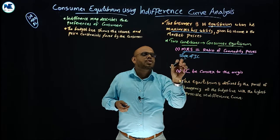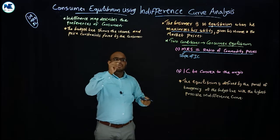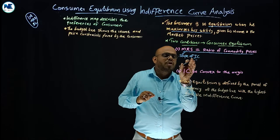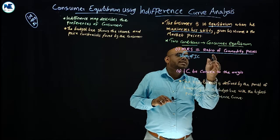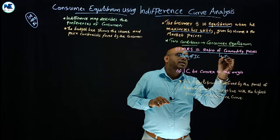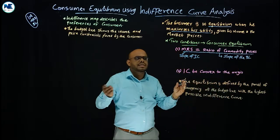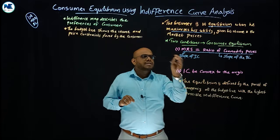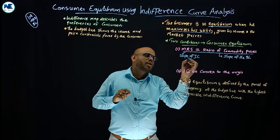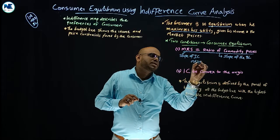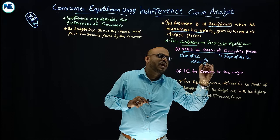Simply, the slope of the indifference curve is called the marginal rate of substitution. The first condition is that the slope of the indifference curve should be equal to the ratio of commodity prices, which is also the slope of the budget line. So MRS should equal the price ratio — that is, MRS equals PX divided by PY.